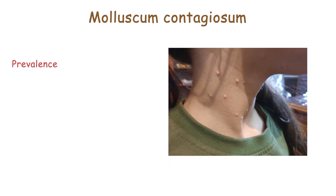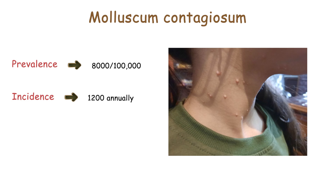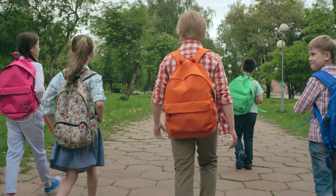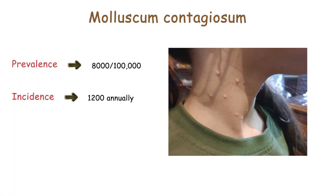The prevalence of molluscum contagiosum is about 8,000 cases among 100,000, and the incidence rate is 1,200 cases annually. Girls and boys are affected equally in childhood, but in adulthood the prevalence is higher in men by about 3 times than women. And generally, it is more common in developing countries.